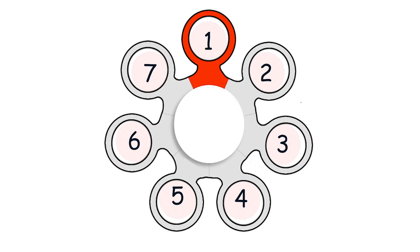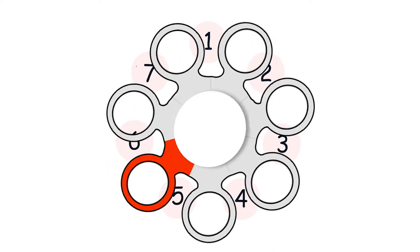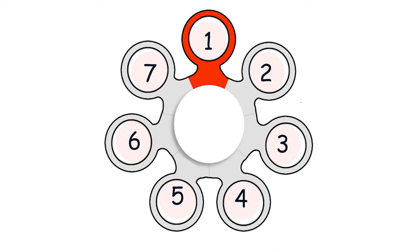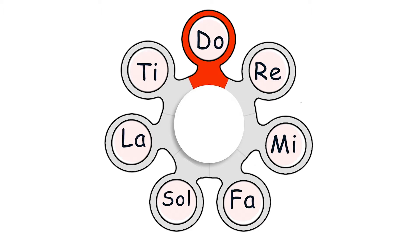Now we're going to deal with cycles. In science, a cycle goes around in a circle. We're going to use the numbers 1 through 7. Take a look at my wheel — the wheel could go forward, it could go backwards, whatever we want it to do. Now if we use the Do, Re, Mi's like in the song, we have Do, Re, Mi, Fa, Sol, La, Ti, Do — it's just another language for numbers.